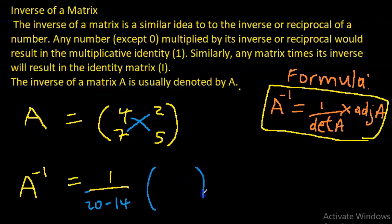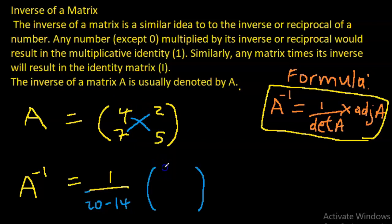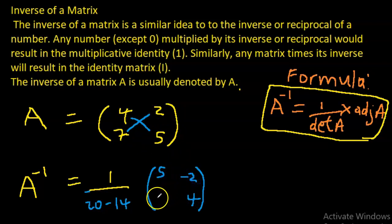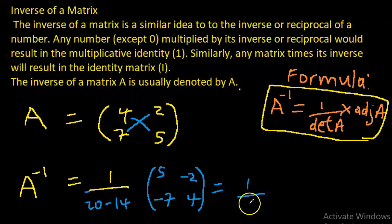The adjoint: the leading diagonal elements switch places, and for the other diagonal the elements change their signs. Hence the inverse of A here would be 1 over 6 times the adjoint matrix.